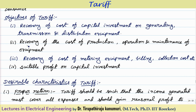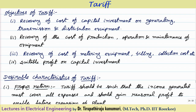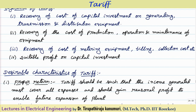There should also be recovery of the cost of production of energy, operation and maintenance of different equipment in both power generation, transmission, and distribution. The recovery of the cost of metering equipment, billing, and collection costs should all be recovered back. Along with this, a suitable profit on the capital investment should also be obtained so that we can go for future expansion of our plant, because whenever a person is investing in the power sector, he expects some return.